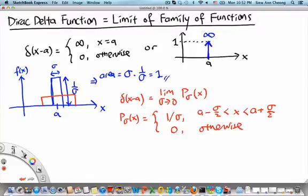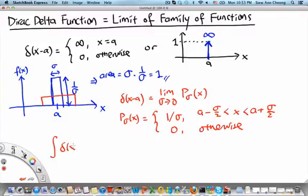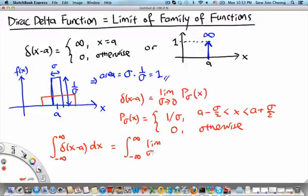This is how the Dirac delta function can be defined in terms of the limit of this family of rectangular functions characterized by a single parameter σ. As σ tends to 0, the rectangular function becomes very tall but very skinny, while the area remains equal to 1. So: δ(x − a) = lim_{σ→0} p_σ(x), and we integrate δ(x − a) dx from −∞ to ∞.